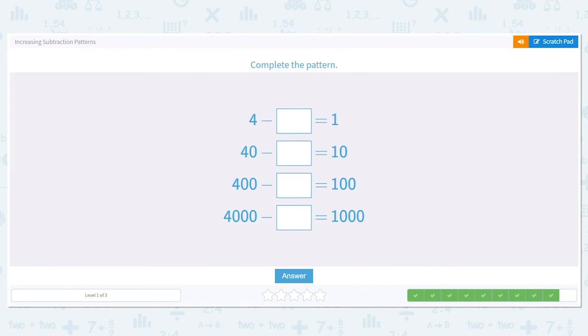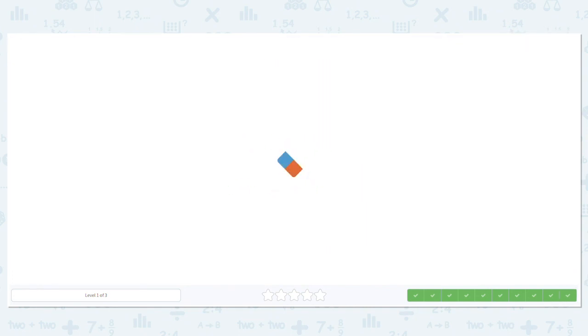Last one. 4 minus what equals 1? If we can solve that by doing 4 minus 1, we'll figure out the rest of our numbers in no time. So 4 minus 1 equals what? 3. Since I know that, and my basic facts are the same in each section, 40 minus what is 10? 30. 400 minus what is 100? 300. And 4,000 minus what is 1,000? 3,000. Excellent job with these patterns. Great job today. I'm so proud of you.